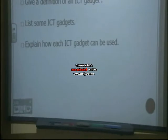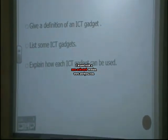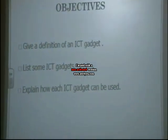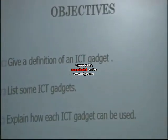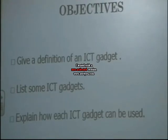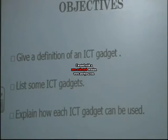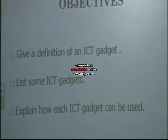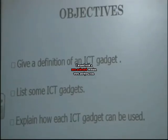The objectives of this lesson are: number one, at the end of this lesson you should be able to give a definition of an ICT gadget. Secondly, you should be able to list some ICT gadgets. And lastly, you should be able to explain how each ICT gadget can be used.